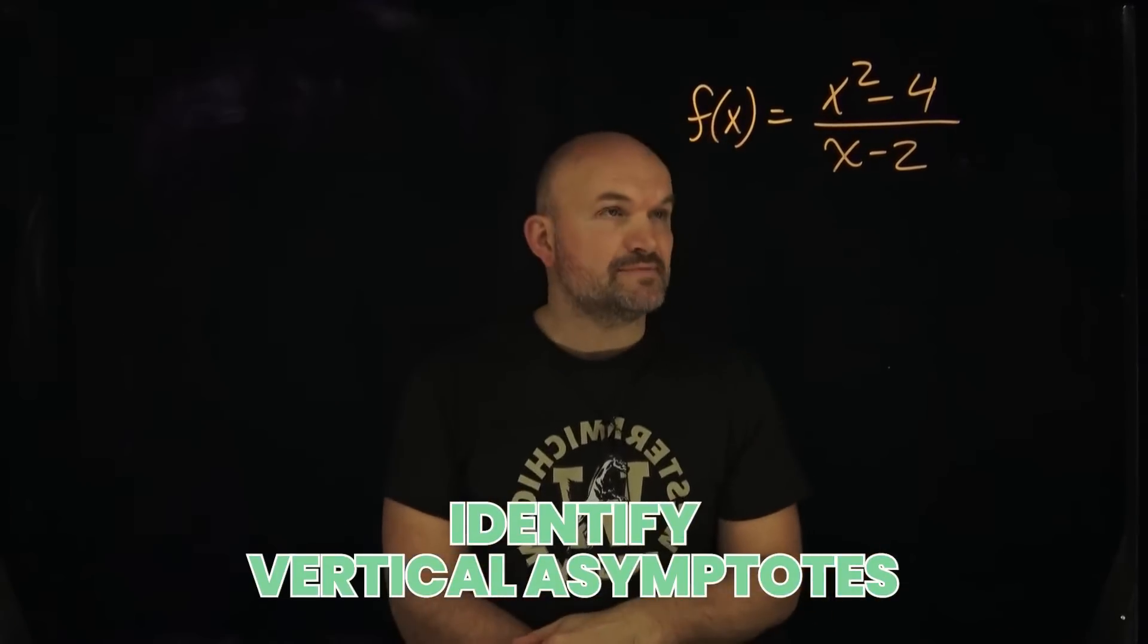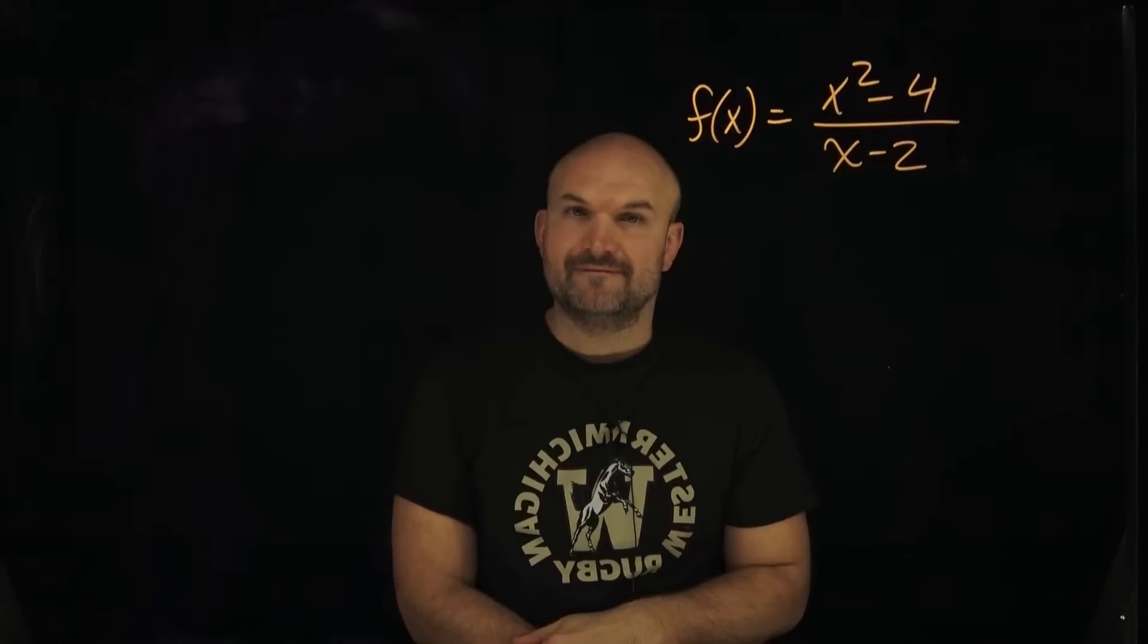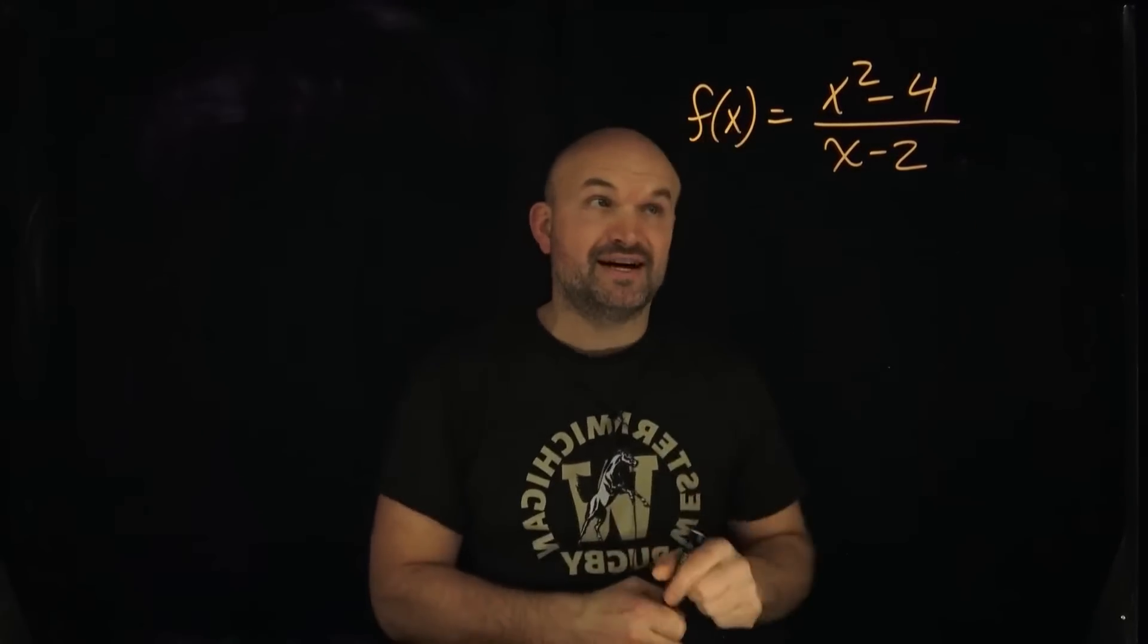All right, when we need to identify the vertical asymptotes or the hole, we always want to look to factor. Don't just go ahead and try simplifying things.